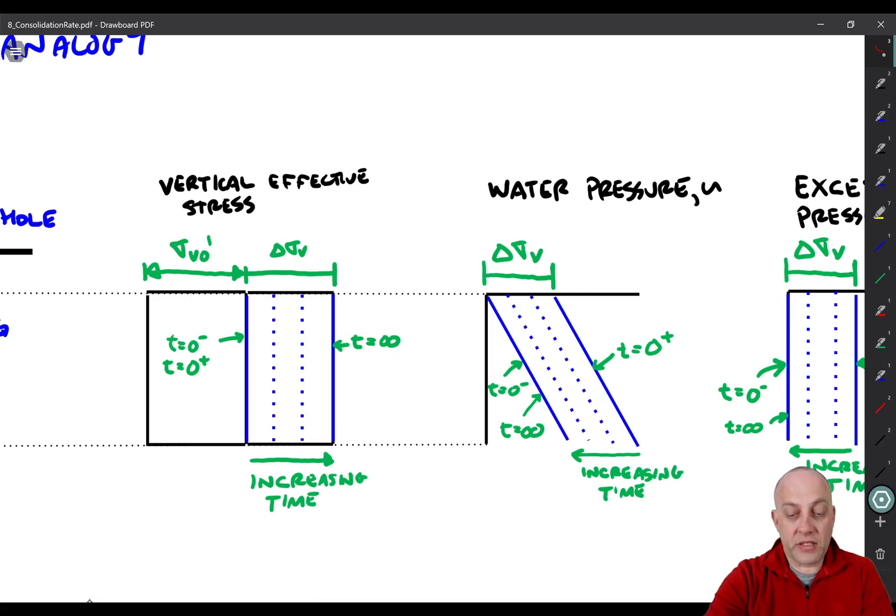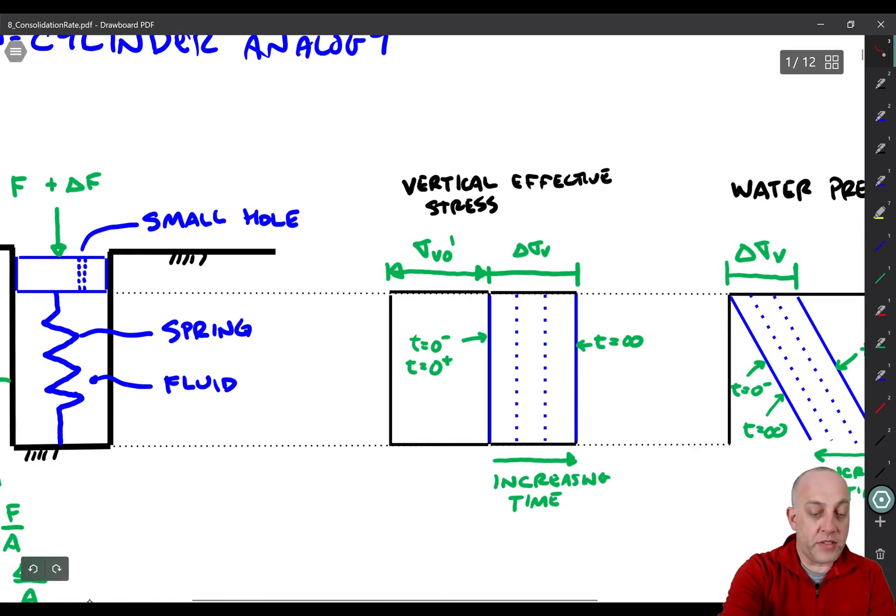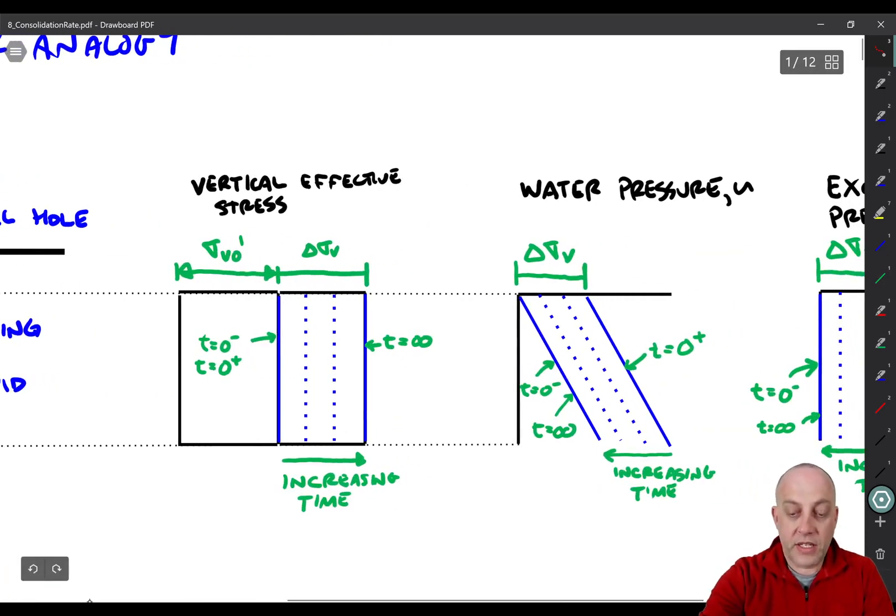Alright, now what will happen is that slowly over time the water will start leaking out of here because there's no pressure on the outside of the piston, high pressure on the inside, so there's a hydraulic gradient pushing water out. And sometime later you would have this plot, and sometime after that you would have this plot, and eventually as time goes to infinity the water pressure will go right back to where it was when it started.